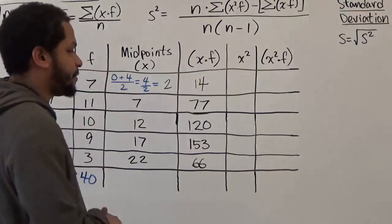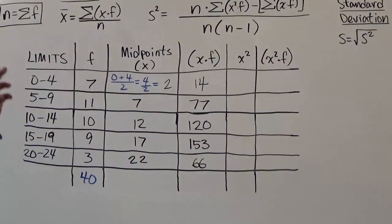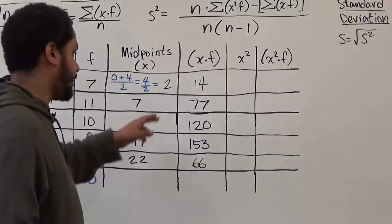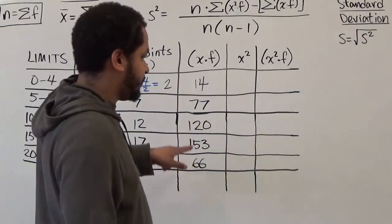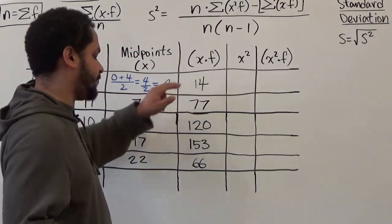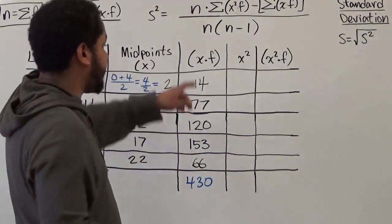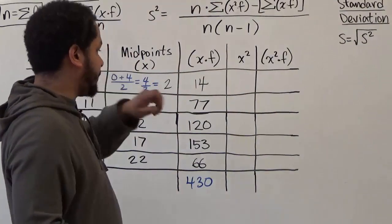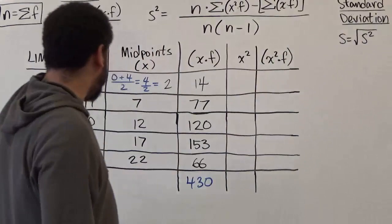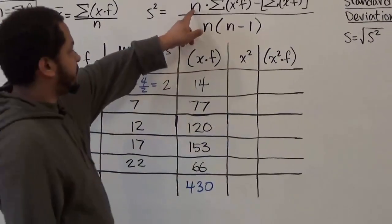Make sure these computations are accurate — use a calculator, especially on an exam. Now we're going to take the sum of the xf column. When we add sixty-six, one hundred fifty-three, one hundred twenty, seventy-seven, and fourteen together, we get a grand total of four hundred and thirty. That is the sum of the x times f column. The sum of f is your n value, which is forty.